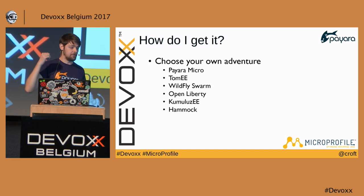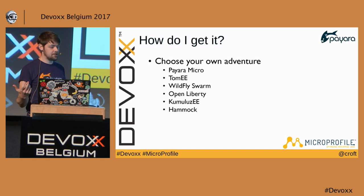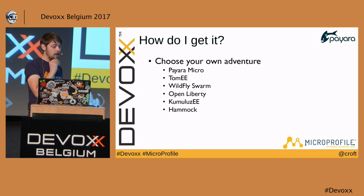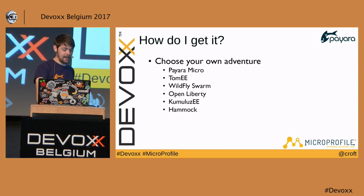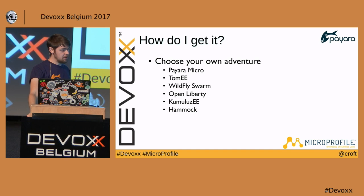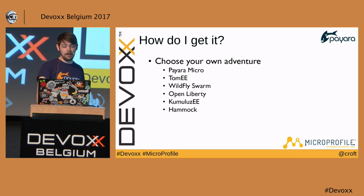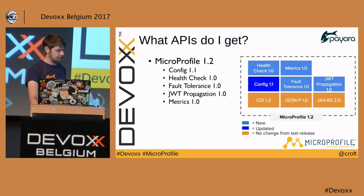Here's a list of implementations: Payara Micro is Payara's implementation; Tomitribe has their implementation folding in Apache projects; WildFly Swarm is Red Hat's; Open Liberty is IBM's now fully open-source implementation. KumuluzEE is a small Java EE implementation that has implemented almost all MicroProfile specs, and Hammock is a CDI-based REST microservices platform that implements all MicroProfile specs.